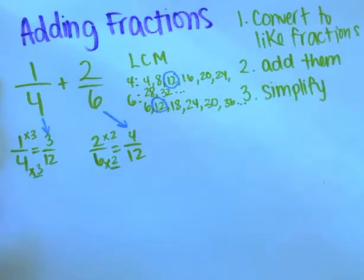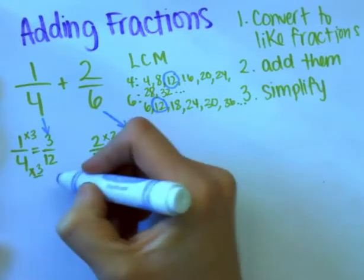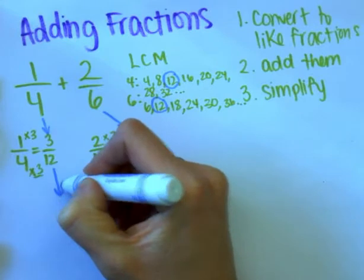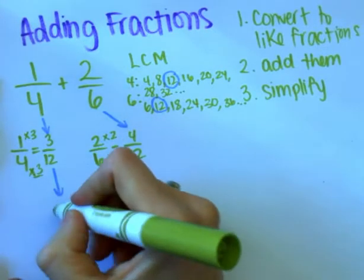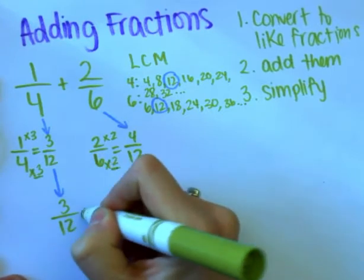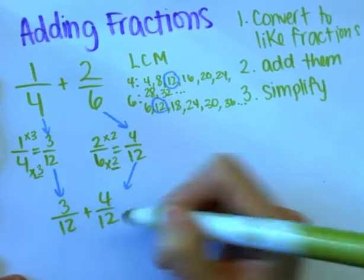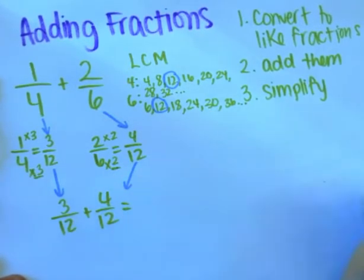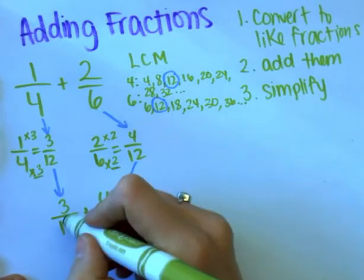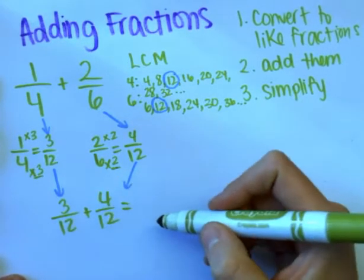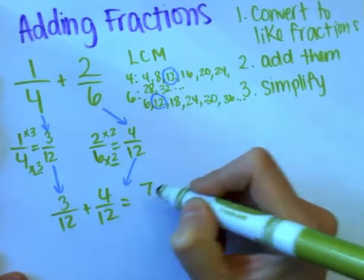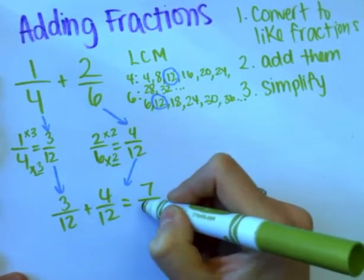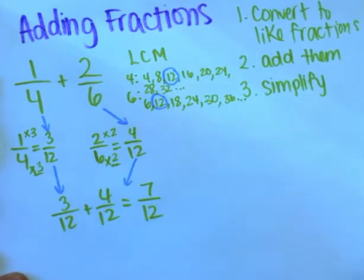I need to rewrite my problem with my new converted fractions. So I am going to add three-twelfths plus four-twelfths. Now that I have like fractions, I can just add right across the top — the numerators. Three plus four is seven, and I get seven-twelfths.